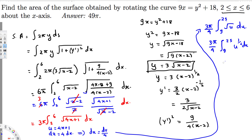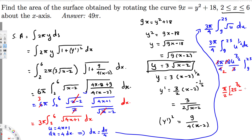Integrating: (3π/4) · [u^(3/2) / (3/2)] from 9 to 25. Dividing by 3/2 is the same as multiplying by 2/3, so the 3s cancel and the 4 becomes 2. We get (π/2) · [25^(3/2) - 9^(3/2)].